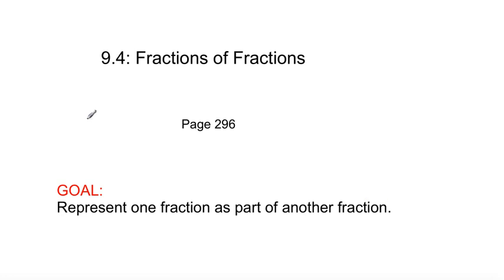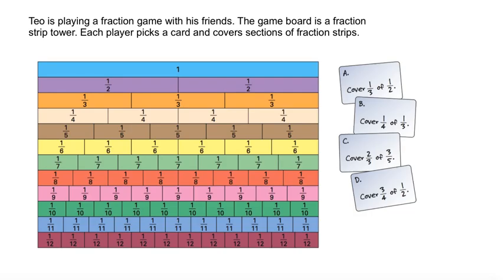And by the end of this, it will make sense, I promise you. Here is the main example. I'd like you to follow along from this example and take a look at the fraction strips as I go along. Question is, Tio was playing a fraction game with his friends. The game board is a fraction strip tower. Each player picks a card and covers sections of fraction strips. And here are the cards, A, B, C, and D, and they're fractions of fractions. So take a look at the fraction strips.